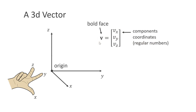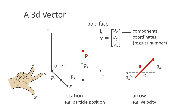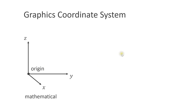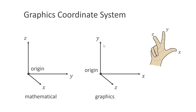We can use vectors for two different things. First, we describe a position in 3D space like the particle position using x, y and z. We can also use it to describe an arrow like the velocity of a particle. Here you can see that the x-component is negative, pointing against the direction of the x-axis. In mathematics, the coordinate system is oriented such that the x and y-axis are on the ground and the z-axis points upwards. In graphics, the coordinate system is oriented such that the y-axis points upwards. As you can see, this is still a right-handed coordinate system.